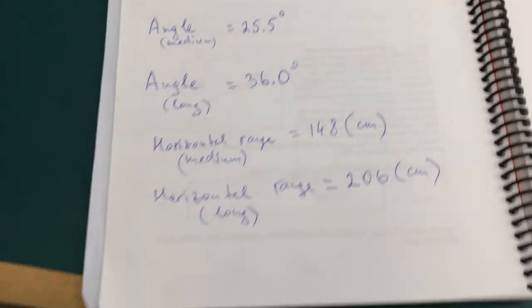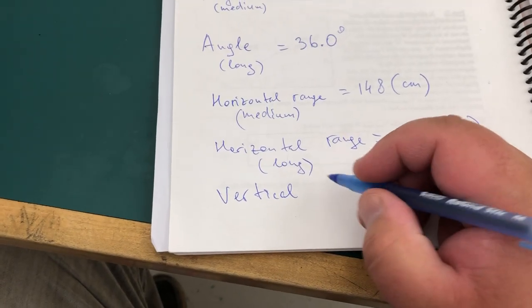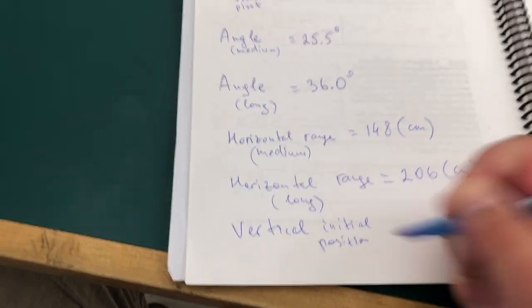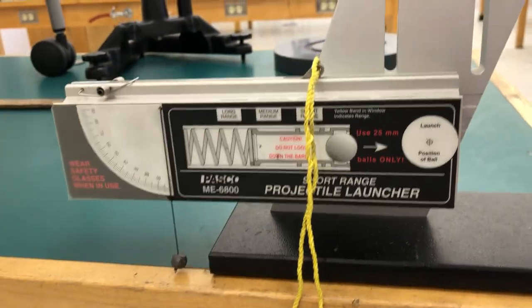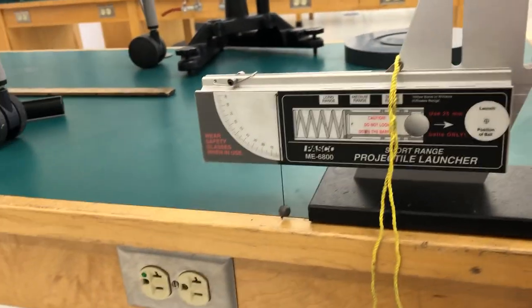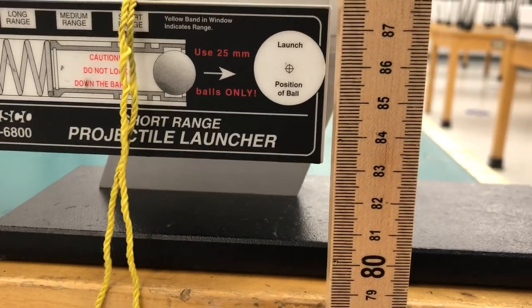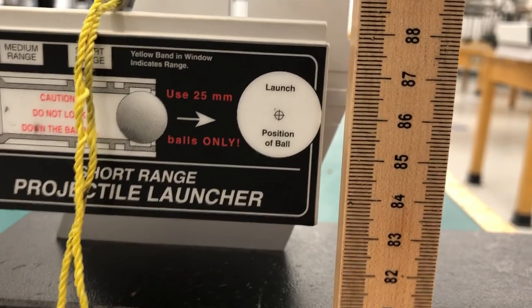You have the horizontal and the vertical coordinate. Vertical coordinate is missing, let's do it right now. The initial position is starting from the floor and all the way to the launching position of the ball. We got 86 centimeters for the initial vertical position.